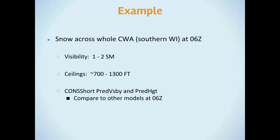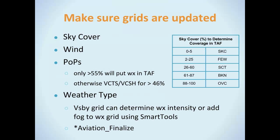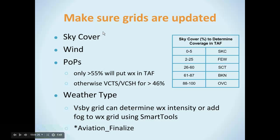We'll take a look at an example where there was snow across the whole county warning area of MKX — almost all of southern Wisconsin. That was at 06Z on February 1st during a big snow event with primarily easterly winds, some lake-enhanced snow, as well as synoptic snow. The general visibility was one to two miles over the whole area with ceilings in the 700 to 1,300-foot range. When going into a situation of making TAFs from grids, you have to make sure your sky cover is what you want.